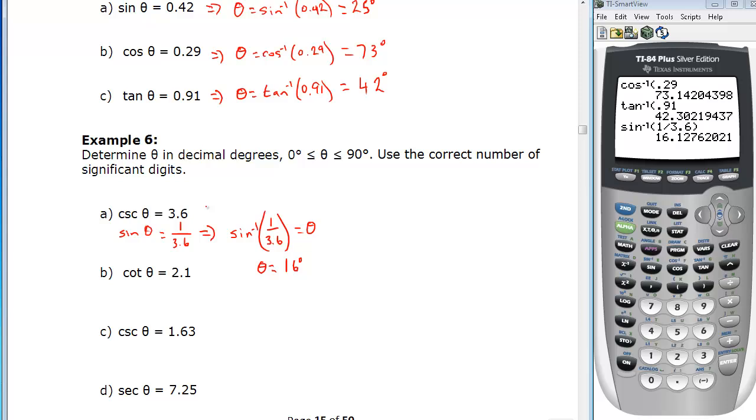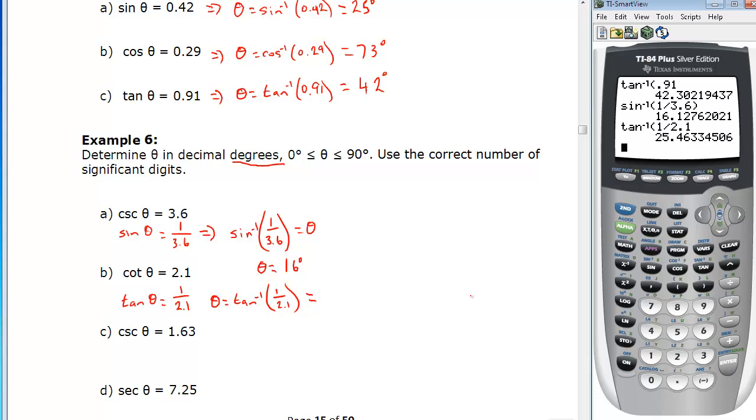I didn't mention it before we started the question, but again, we keep our calculator in degrees because we're asked for degrees, and we're also asked for between 0 and 90, so all of our angles should be in quadrant 1. Continuing then, for B cotangent, the reciprocal is tan theta. Reciprocal of 2.1 is 1 over 2.1. Theta is the tan inverse of 1 over 2.1, which gives us 25 degrees rounded to two decimal places.